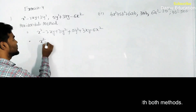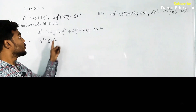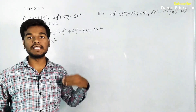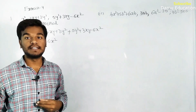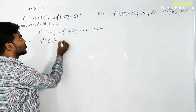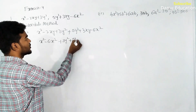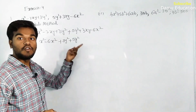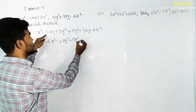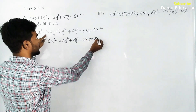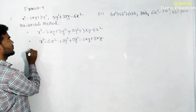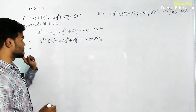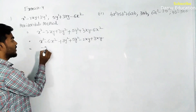Write minus 6x². Then for y² terms — as I said, we write all like terms in descending order — plus 3y² and plus 5y² are there. Then go for the xy terms: minus 2xy and plus 3xy.